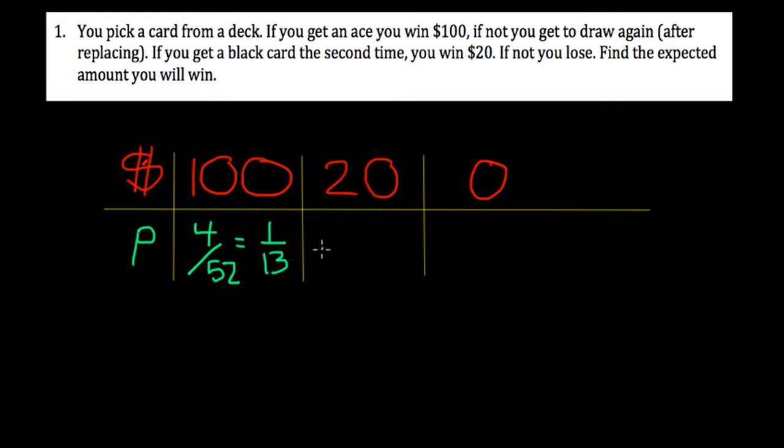Okay, $20. Well, for that to happen, you would have had to lose the first round. So that would be 48 out of 52 or about 12 out of 13. So you have to lose the first round for you to even get to this level. You don't get to play for the $20 if you win the first round.